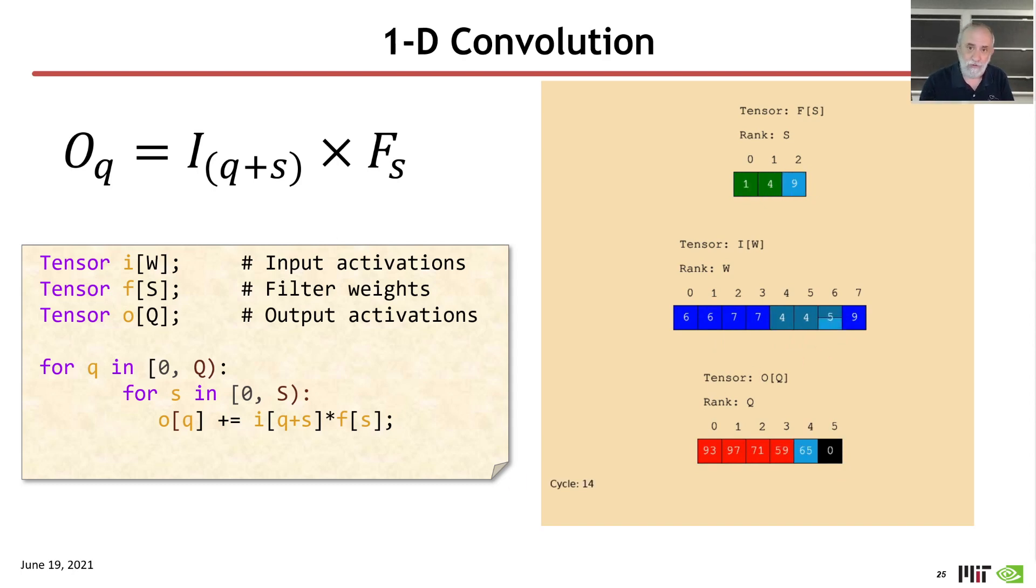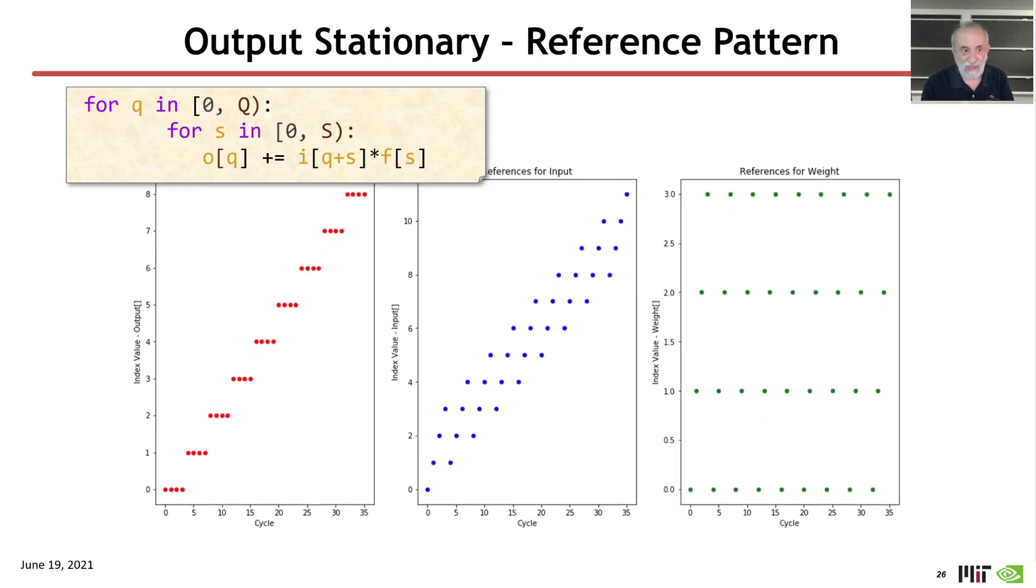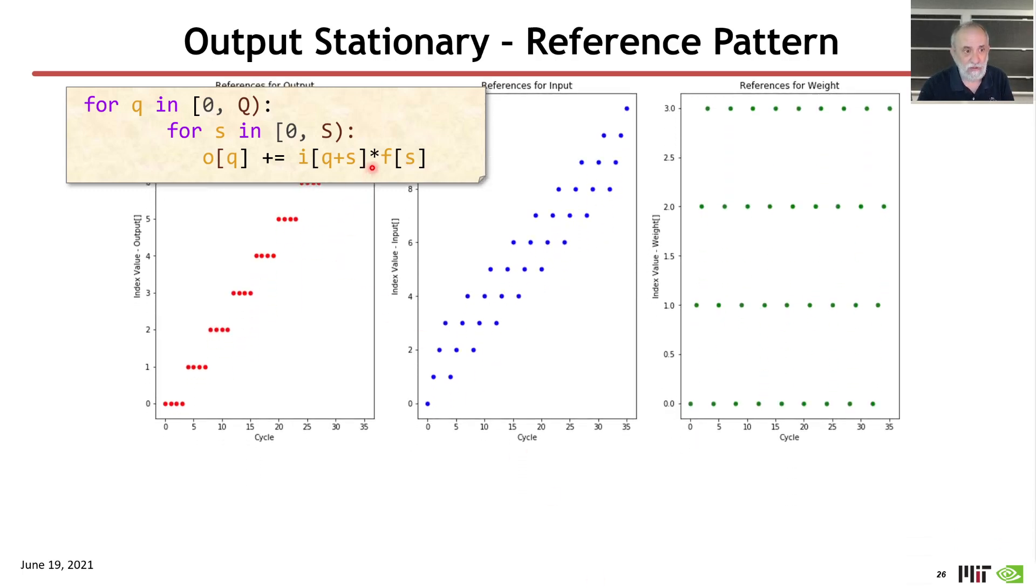As I'm sure you're familiar, this is an output stationary dataflow. And so again, we can represent that dataflow by the loop nest, and we can see the spacetime diagram of the activity there, where we work on the same output until we finish it. We work on a set of inputs, a small window of input activations, and we rotate amongst all of the outputs.